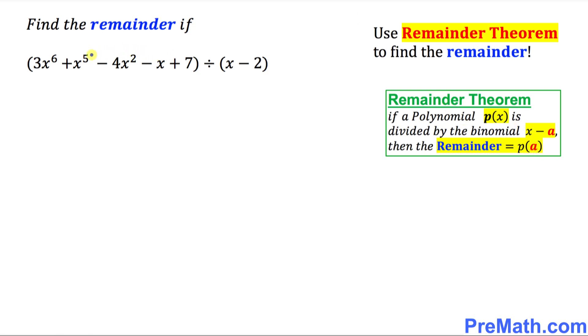We're going to apply this definition. Let's focus on the dividend first. I'll call this p(x), where p stands for polynomial. So p(x) = 3x^6 + x^5 - 4x^2 - x + 7. That's the first step.